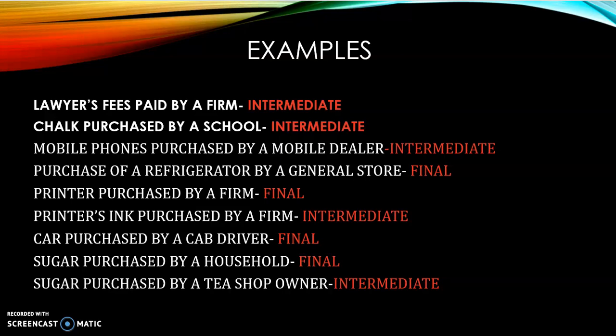Car purchase by a cab driver — many students think it is intermediate, but no. Car purchase by a cab driver is long-term use; it is his investment and will generate future income, so that is a final commodity. Sugar purchased by a household — students say sugar is used to make tea, and tea is a final good. But no, we as households are using that sugar for our consumption, so it is a final commodity. The same sugar purchased by a tea shop owner or sweet shop owner becomes intermediate, because he is using that sugar to make tea whose cost is already included in the price. The same sugar or salt when bought by a household becomes a final good and is added in the national income.